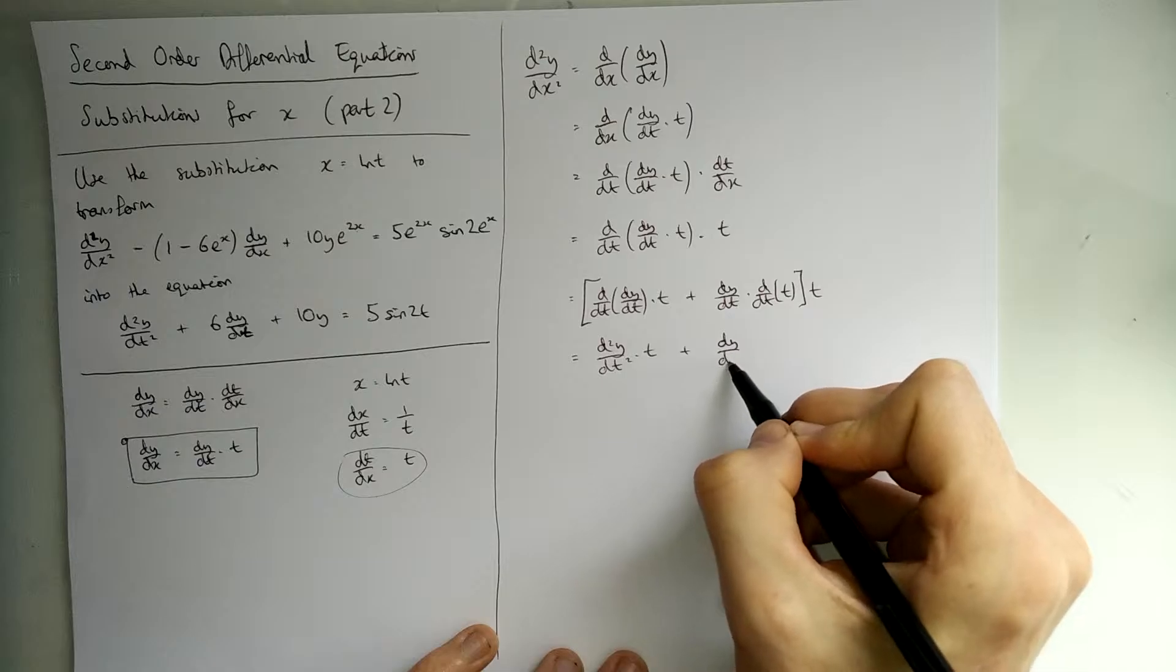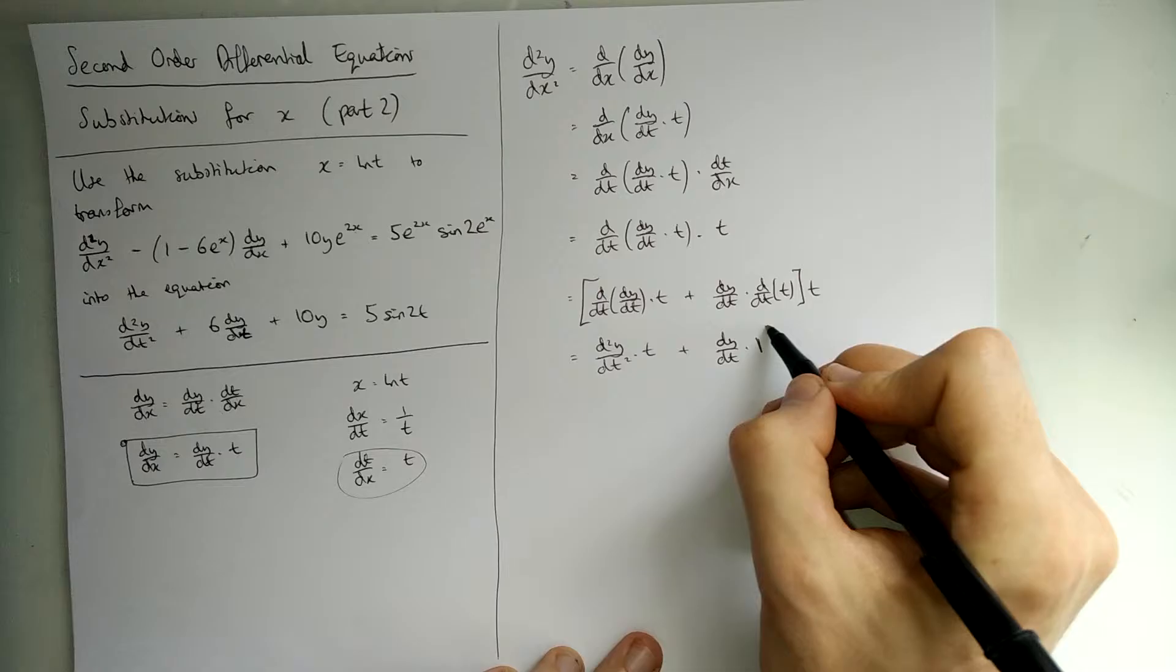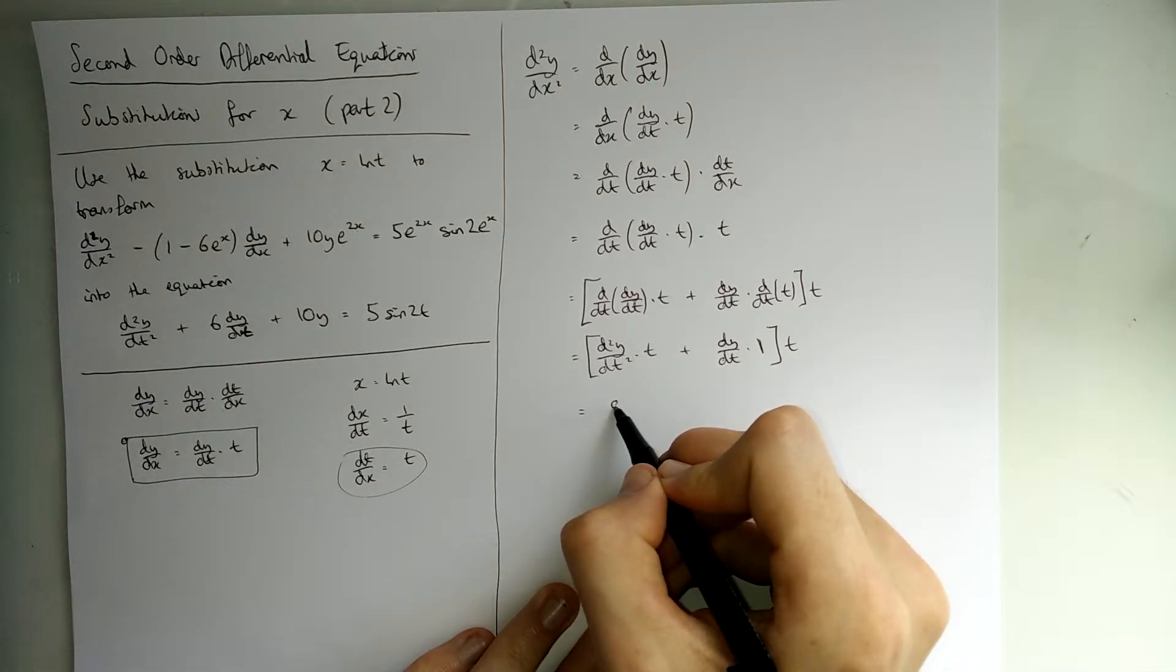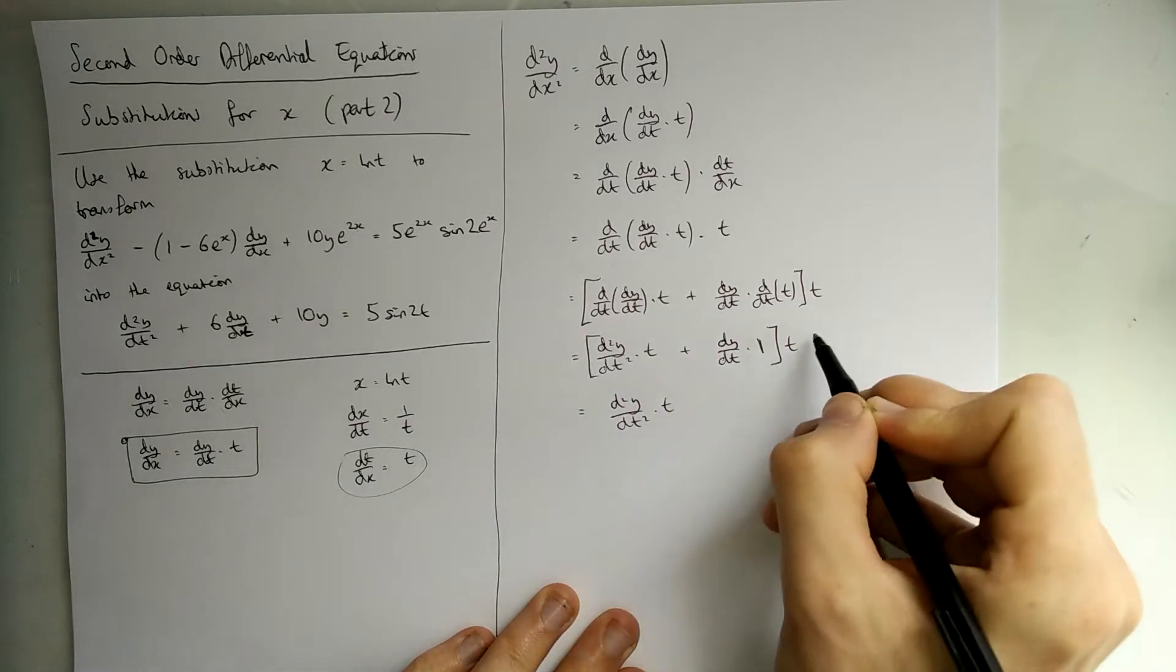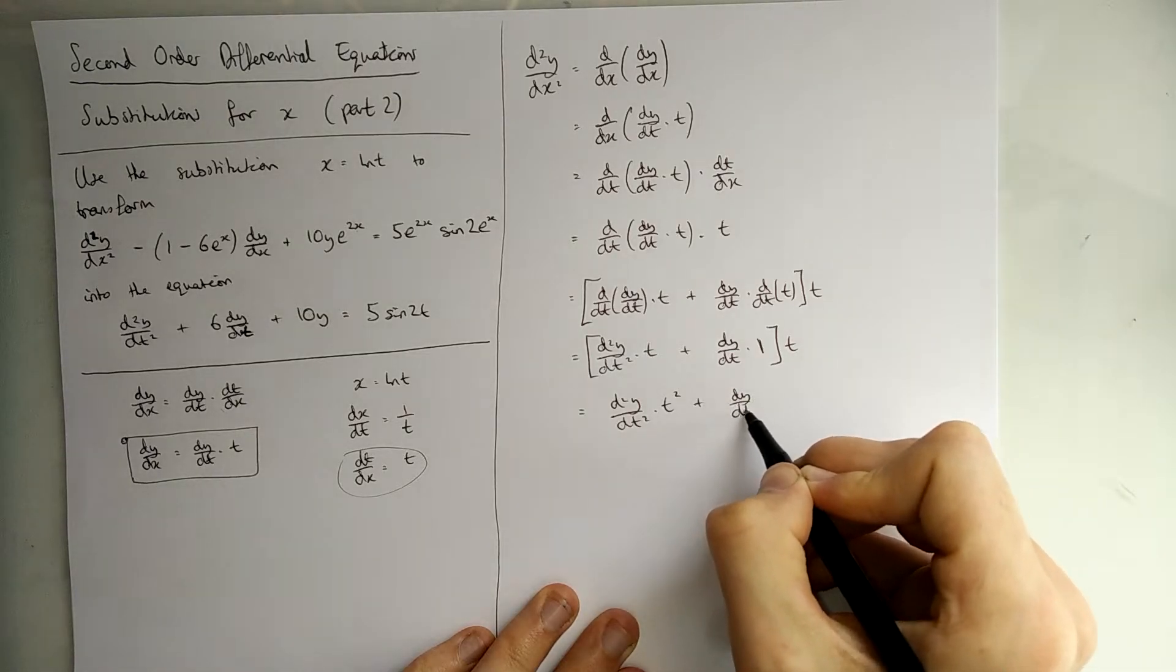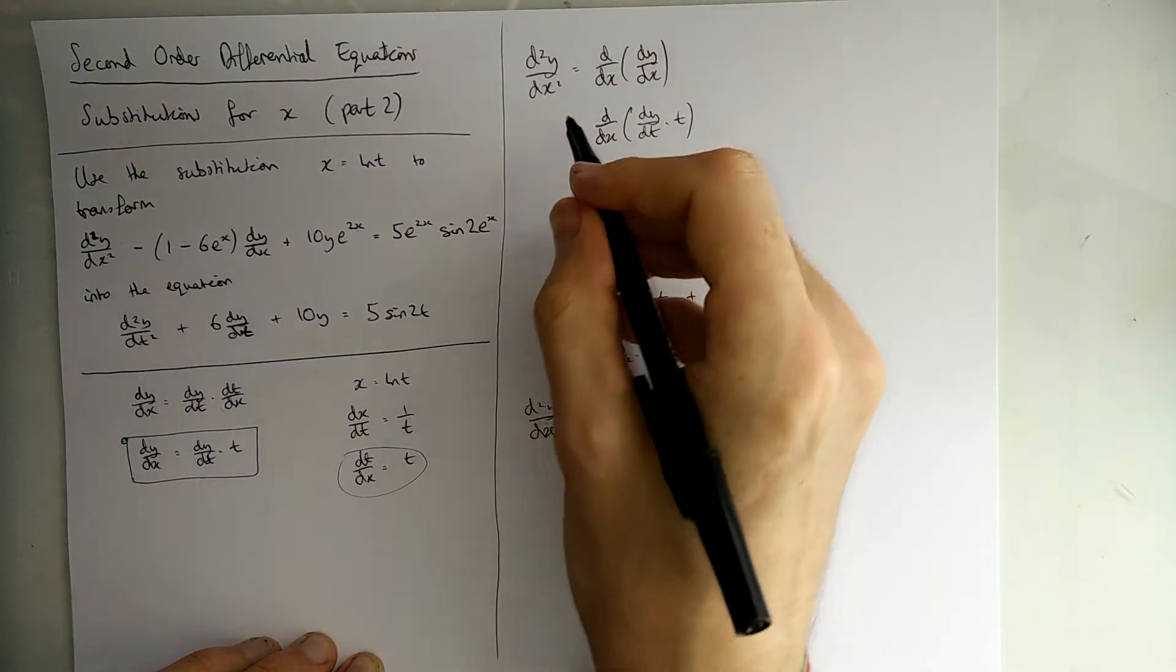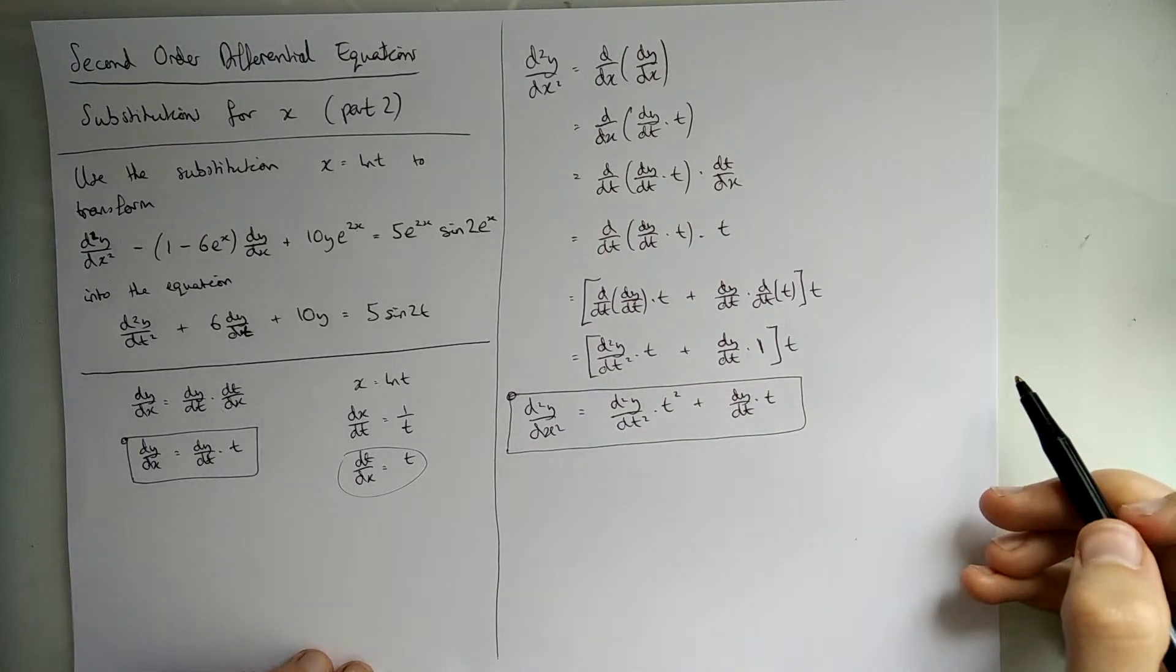And then dy/dt is left alone. And we times by the differential of t, which is 1. Don't need to write it, but I will just so you can see that I've done it for the sake of this video. And now we need to times things out. So, we're going to get d²y/dt² times by the number t and then times by this t. This gives us t². And then here we've got dy/dt and then times by t. Which is great. Bring this d²y/dx² down there. This is all the same equal sign. And that gives us our other formula.